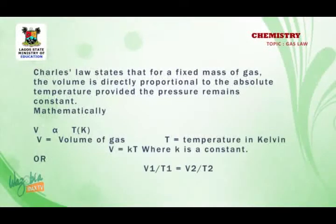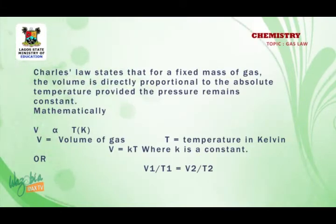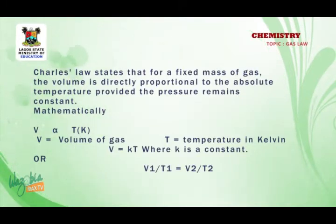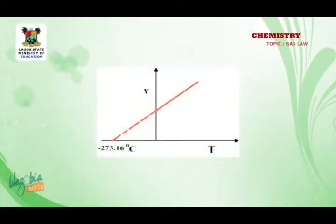Charles's law states that for a fixed mass of gas, the volume is directly proportional to the absolute temperature, provided the pressure remains constant. Mathematically, V varies as T, where V is the volume of the gas and T is the temperature in Kelvin. This gives the equation V1 over T1 equals V2 over T2. The graph shown depicts Charles's law.